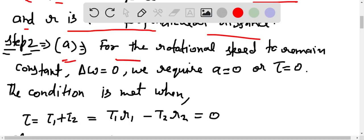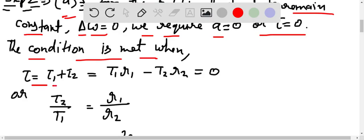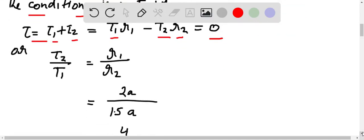Now for part A, for the rotational speed to remain constant, Δω = 0, we require α = 0 or τ = 0. The condition is met when τ = τ1 + τ2 = T1R1 - T2R2 = 0, or we can write it as T2/T1 = R1/R2.